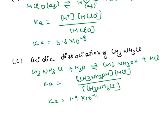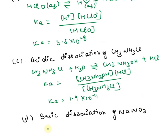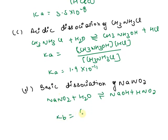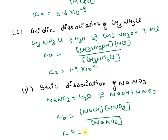In part D, we write down the basic dissociation of NaNO₂. The equation is: NaNO₂ in water dissociates to form NaOH plus HNO₂. The Kb expression is the concentration of NaOH times the concentration of HNO₂, upon the concentration of NaNO₂. The Kb value is 2.3 × 10⁻¹¹ (approximately 1.9 × 10⁻¹¹).